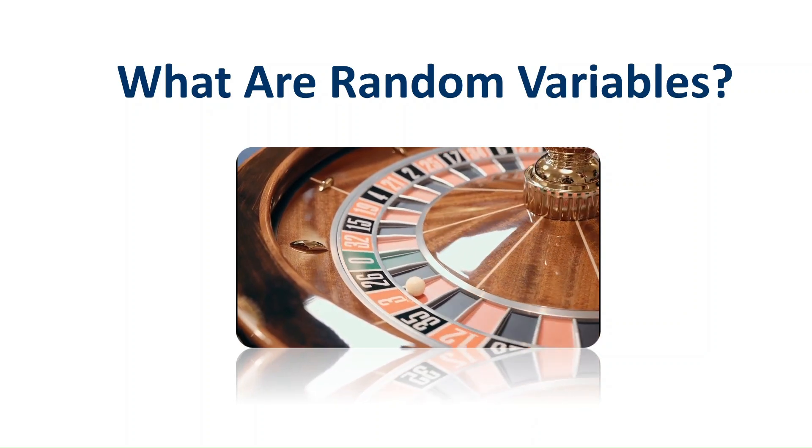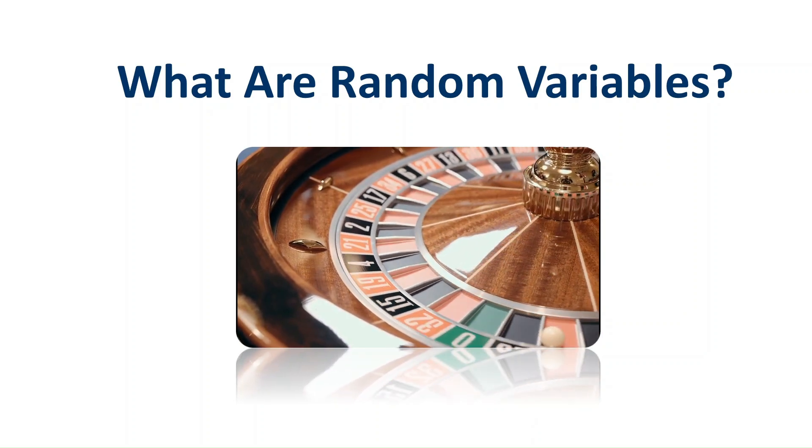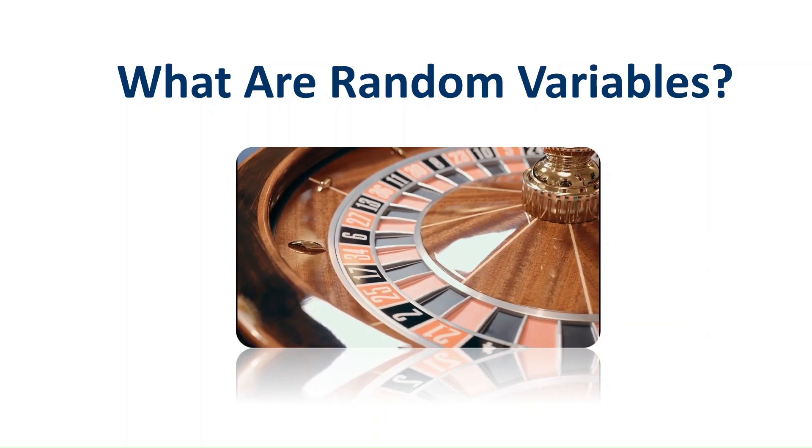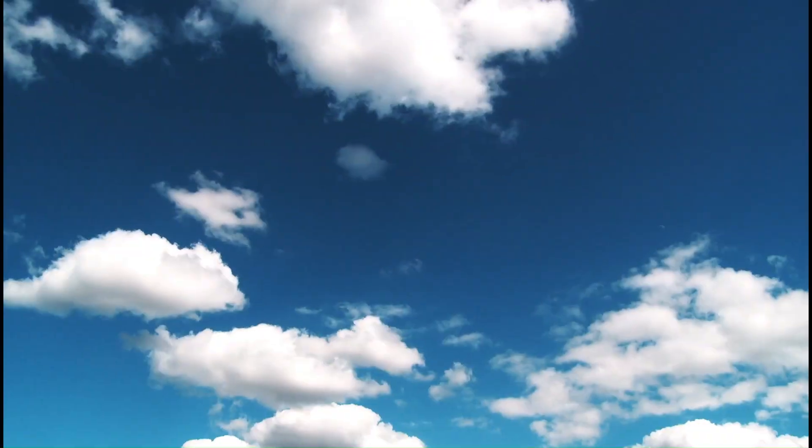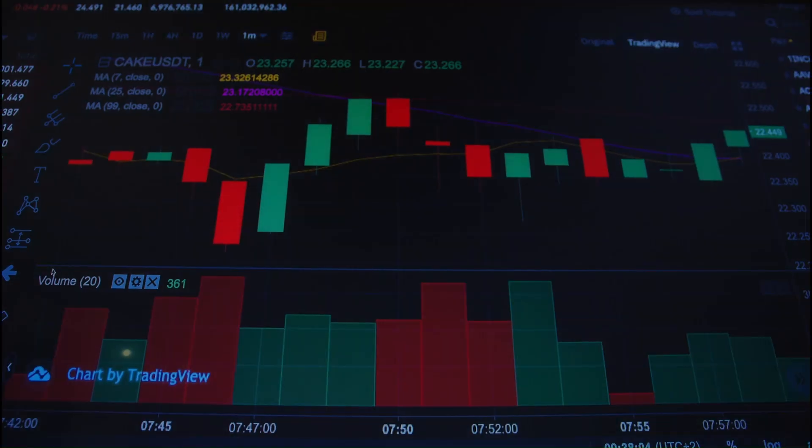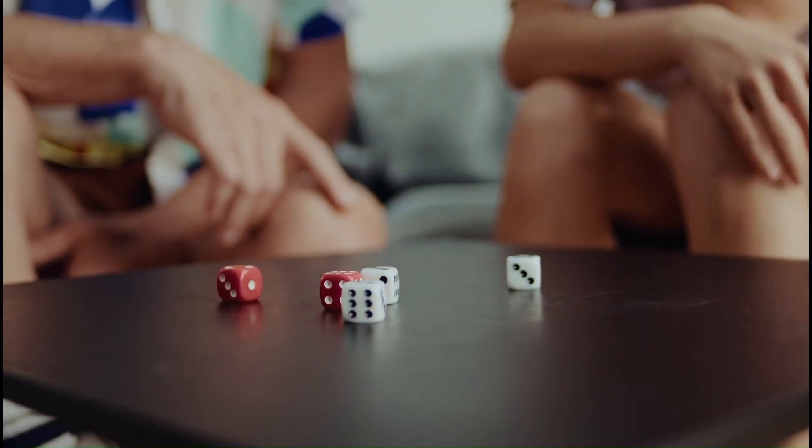Hi there. Today we're going to talk about random variables and how they help us make sense of uncertainty. Have you ever wondered how we can predict outcomes like the weather, stock market trends, or even a simple game of dice? Well, the key lies in a concept called random variables.